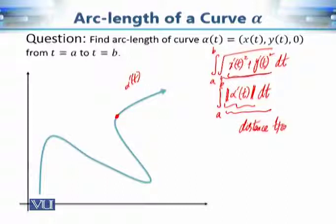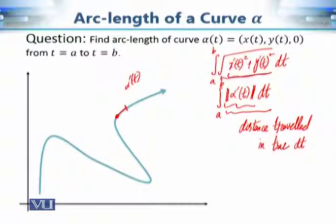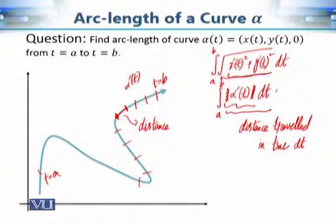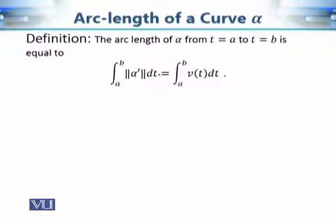The arc length from t = a to t = b is therefore: L = ∫ₐᵇ ‖α'(t)‖ dt = ∫ₐᵇ v(t) dt, where v(t) denotes the speed. This is the formula we will use to compute arc lengths.